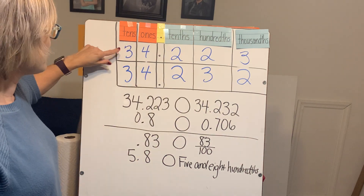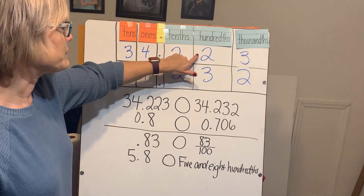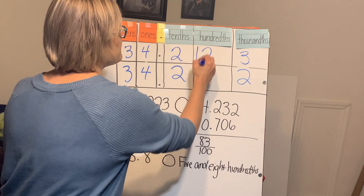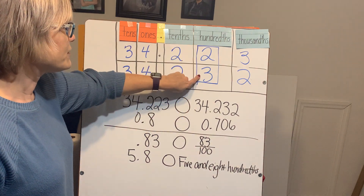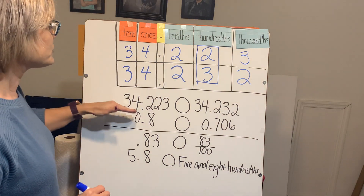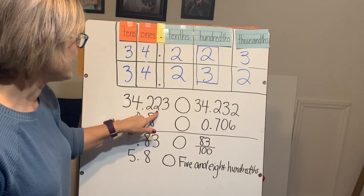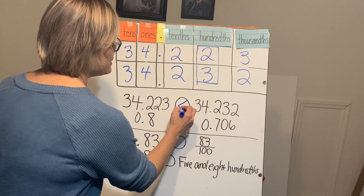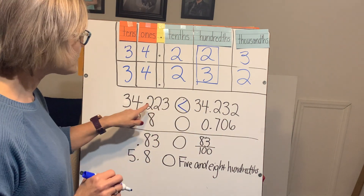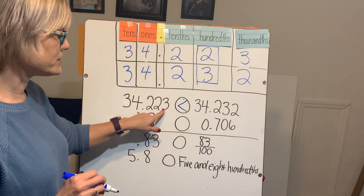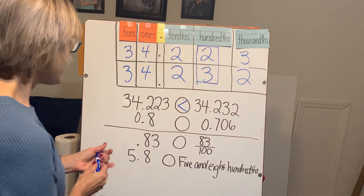When we compare, we go left to right, just like you read. The tens place are the same, the ones place are the same, the tenths are the same. Now we get to the hundredths — this is where we see our first difference. We've got a two in the hundredths and a three in the hundredths. Three is bigger than two, so this number is larger. We make our pac-man like this — the pac-man always eats the bigger amount. So thirty-four and two hundred twenty-three thousandths is less than thirty-four and two hundred thirty-two thousandths.